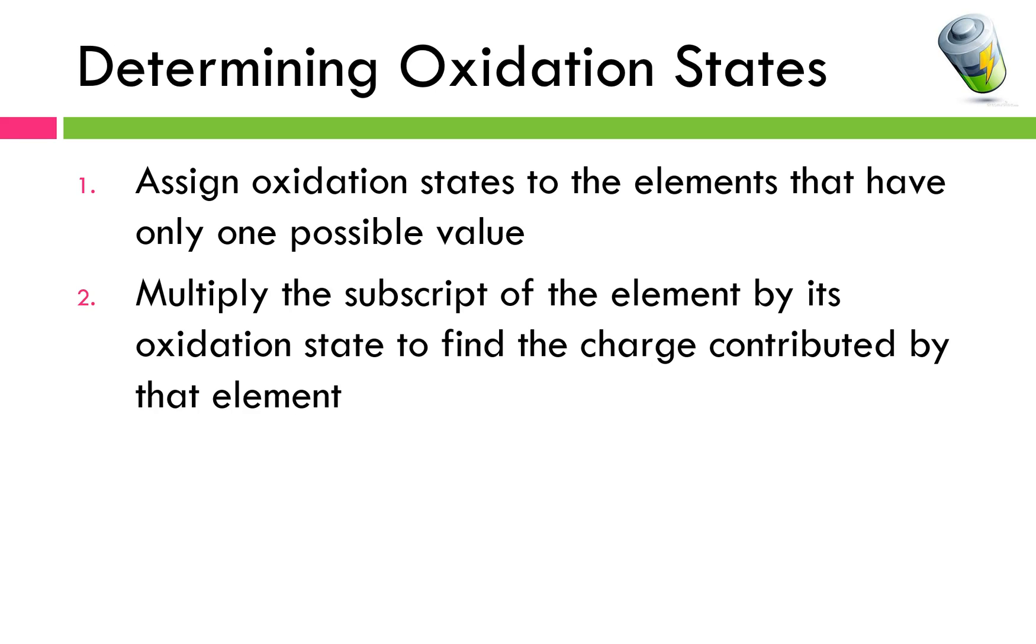From there we're going to multiply the subscript of an element by its oxidation state to find the total charge contributed by that element. This is about as technical as the math is going to get this unit. Simple multiplication. Again we'll show you how to do this in just a minute. And finally, unless we're talking about a polyatomic ion, compounds and molecules are neutral. That means that your positive and negative charges have to cancel out whether you're talking about ionically bonded or covalently bonded chemicals. So I'm going to get into your practice problems and we'll walk through KMnO4 together.